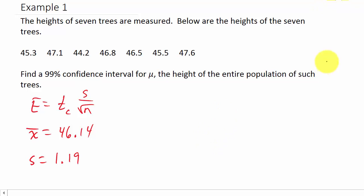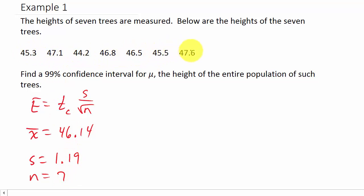I wanted to work a problem where those values weren't given to you, to show that you would have to go and find them. We know that N is 7. So the degrees of freedom, which is N minus 1, equals 7 minus 1, which equals 6. We'll need this value to look up T-sub-C.